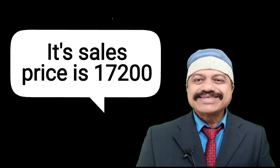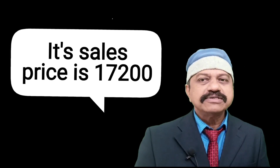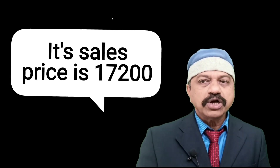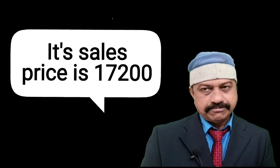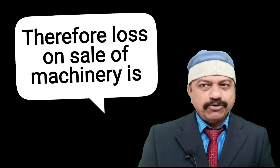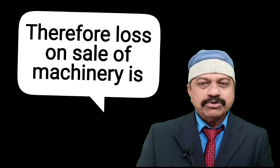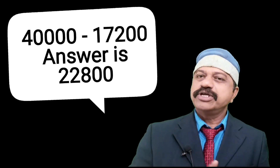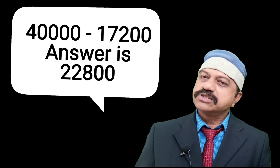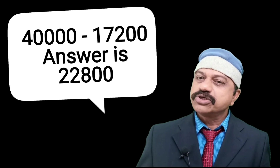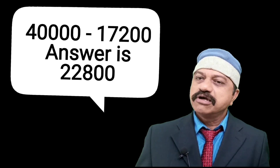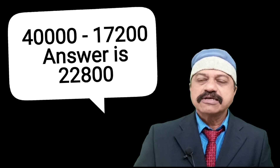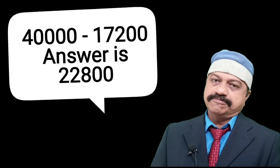Its sales price is 17,200. Therefore, loss on sale of machinery is 40,000 minus 17,200, which equals 22,800.